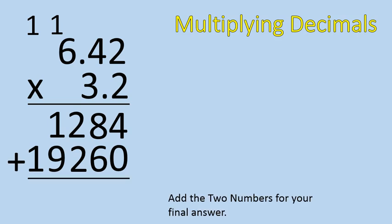All right, now I add up the numbers just like I did before. 4 plus 0 is 4. 8 and 6 is 14. I remember to carry that 1. 2 and 2 is 4, and 1 is 5. 1 plus 9 is 10. And 1 and 1 is 2.